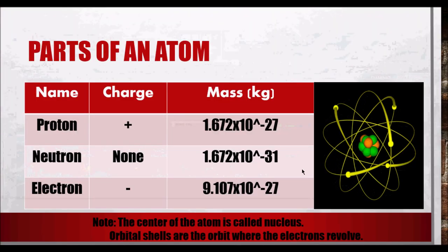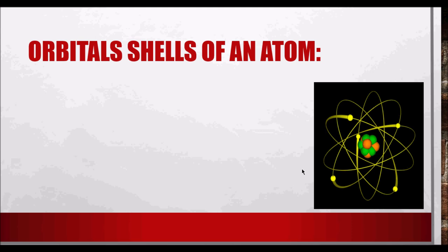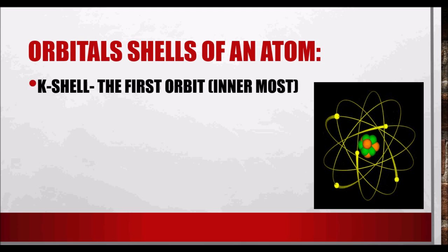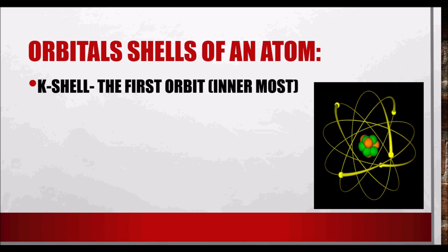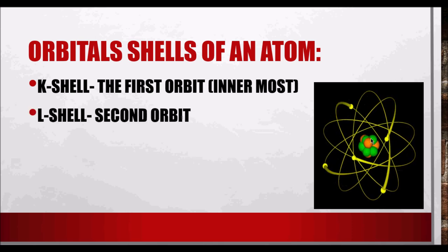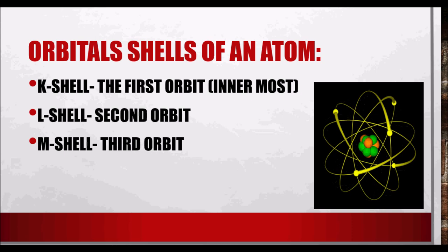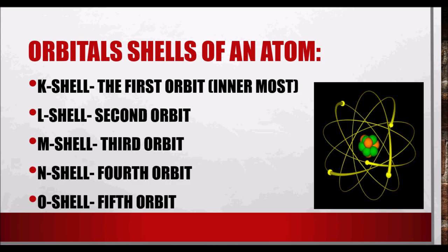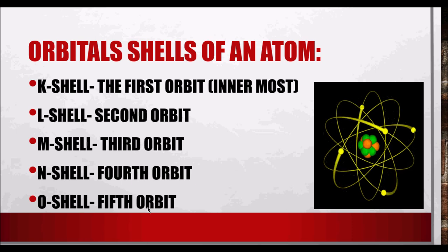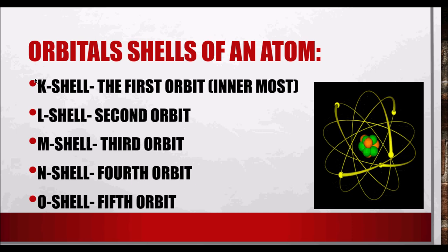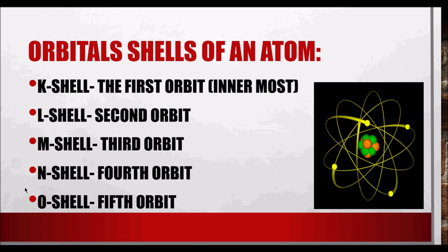There are different names for the shells of an atom. First is the K-shell, the innermost orbit closest to the nucleus. L-shell is the second orbit, M-shell the third orbit, N-shell the fourth orbit, and O-shell the fifth orbit. It's important to know the shell names in electricity.